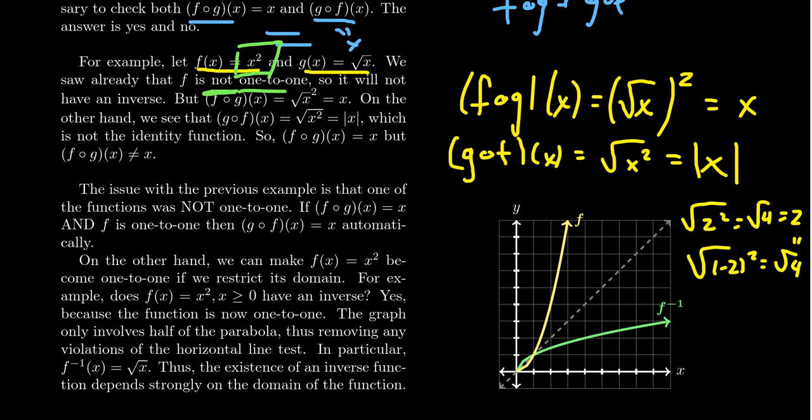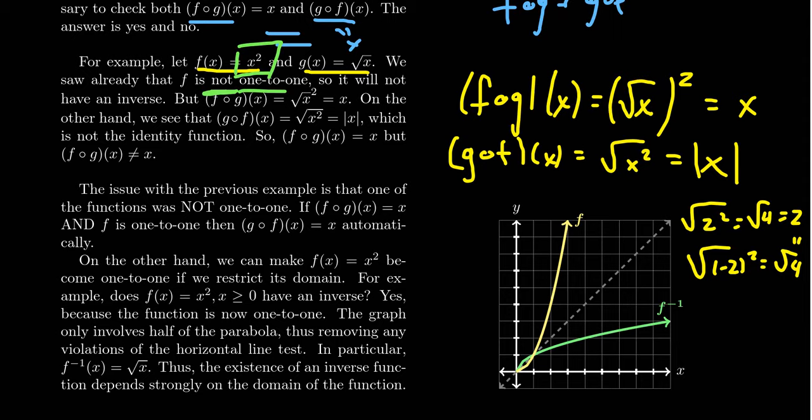Because, like with the numbers 2 and negative 2, if you square 2, you get 4. If you square negative 2, you get 4. And so there's two different x coordinates that have the same y coordinate. And so the way we define inverse functions, we've only defined inverse functions for one-to-one functions. So we can't, so x squared itself doesn't actually have an inverse, because it's not one-to-one.